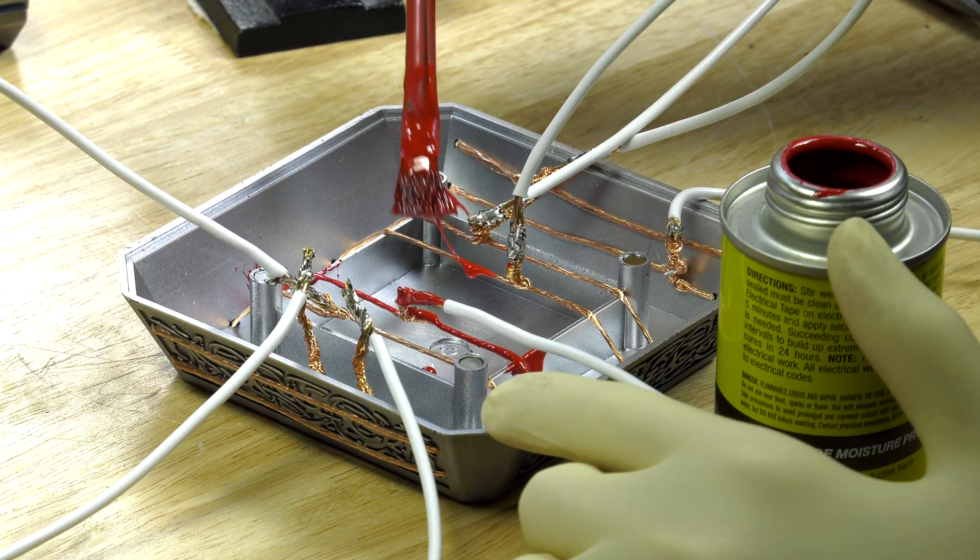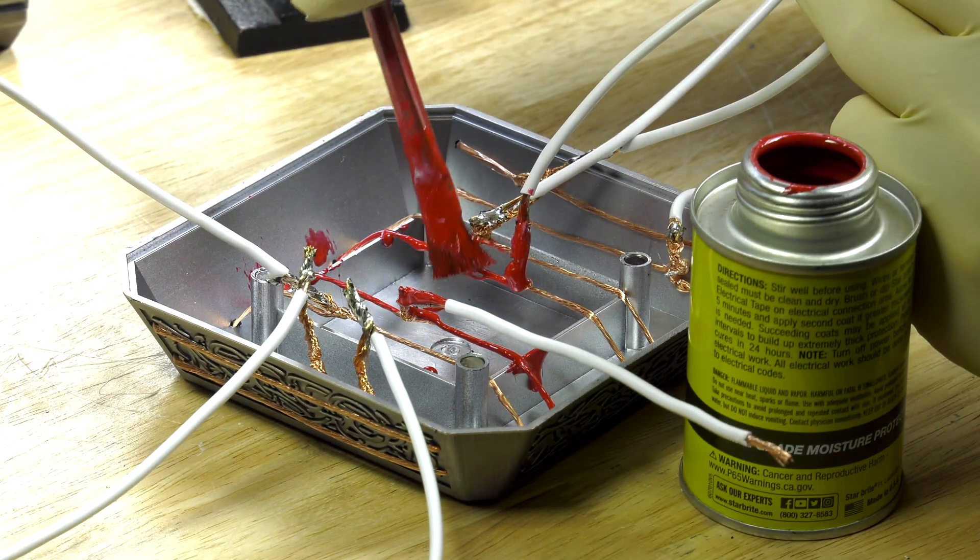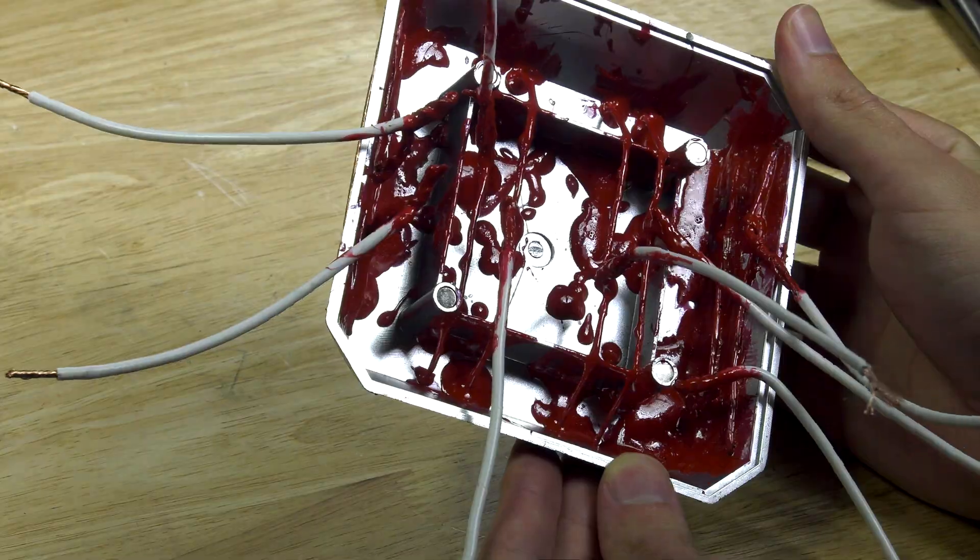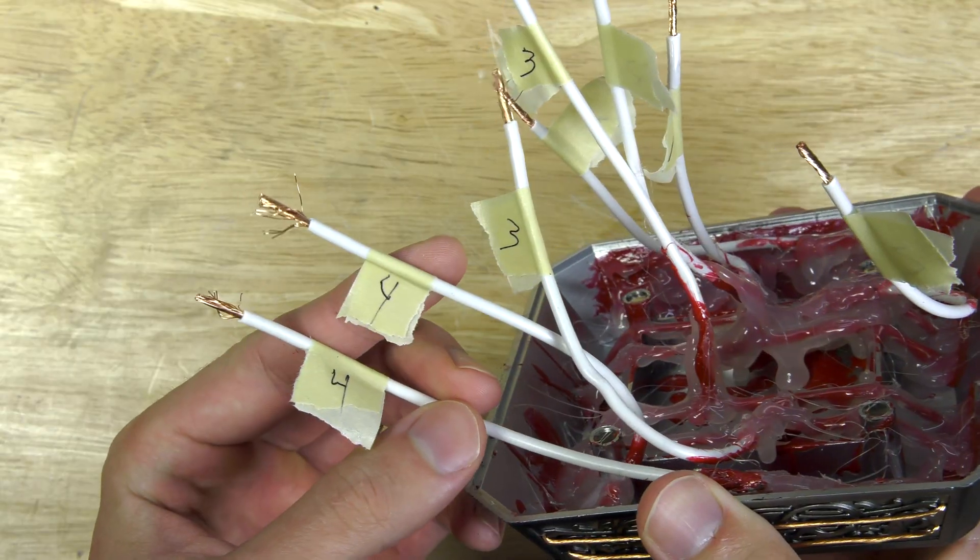Now I probably could have hot glued this from the start but initially I thought this would be a good option or it would work better, but it took forever for the coats to dry. After about my second or third coat I just used a bunch of hot glue to insulate the wires.